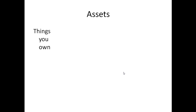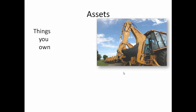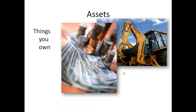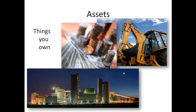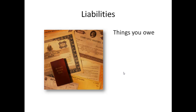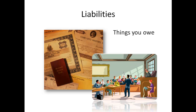Assets are things that you own, like heavy equipment, cash, and real estate. Liabilities are things that you owe, such as bonds owed to creditors or potential damages from a lawsuit.